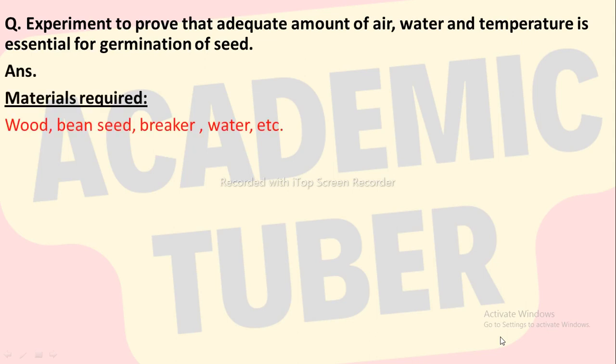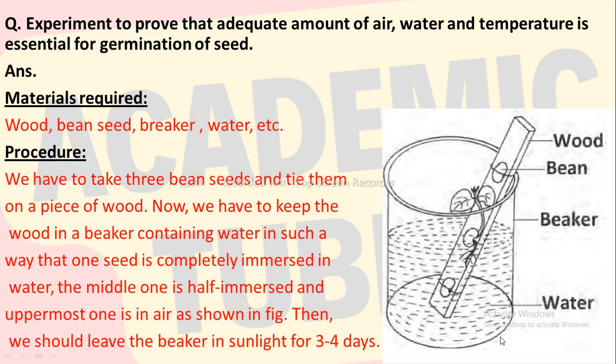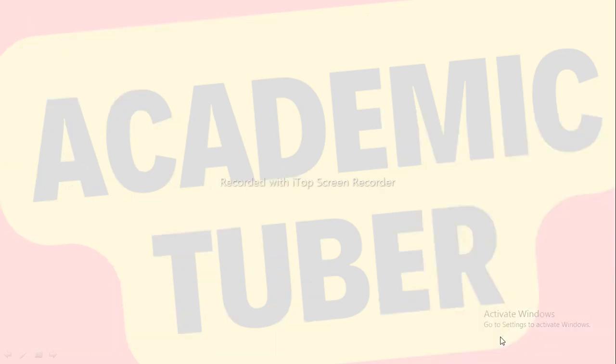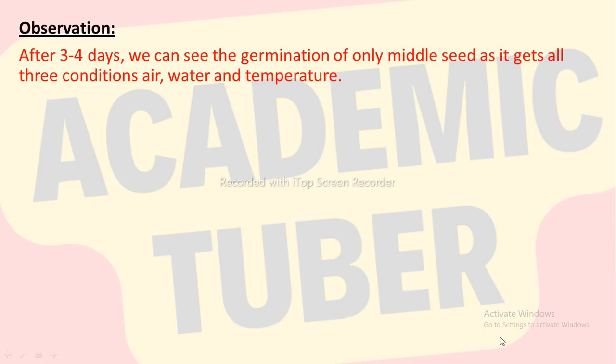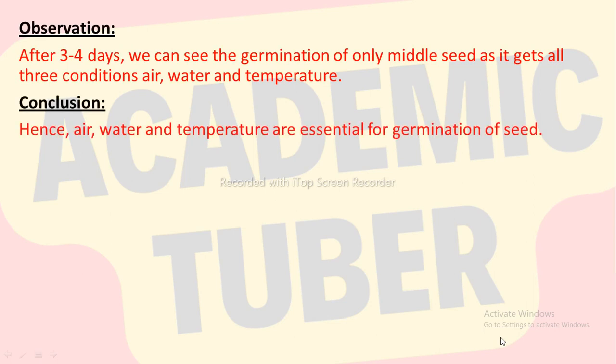To carry out this experiment we need some materials: wood, bean seeds, a beaker, water, etc. Procedure: take three bean seeds and tie them on a piece of wood. Keep the wood in a beaker containing water so that the bottom seed is completely immersed in water, the middle one is half immersed, and the uppermost one is in air, as shown in the figure. Then leave the beaker in sunlight for three to four days. After three to four days we observe that germination occurs only in the middle seed as it receives all essential conditions — air, water and temperature. We can conclude that air, water and temperature are all essential for germination of seed.